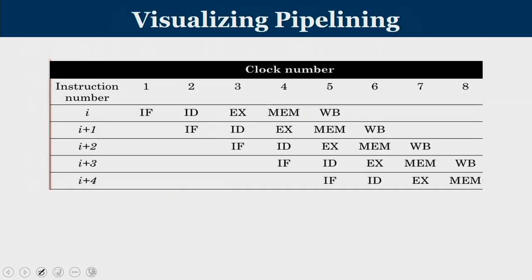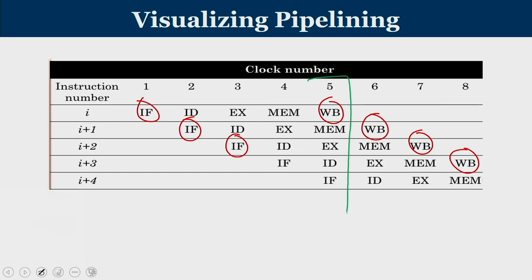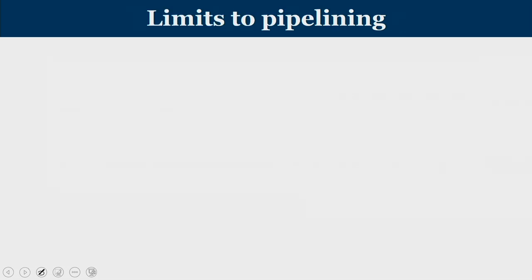Every cycle we start a new instruction even though the previous instruction is not fully over. After the initial latency, for every cycle one instruction gets completed. At any point, all 5 stages of the pipeline are busy with 5 different instructions. This is the ideal case of a pipeline.